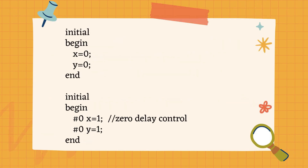Let us understand with an example. There are two initial begin-end blocks, and in both we are assigning x and y with some value. In the first initial begin-end block, we assign x and y with 0, while in the second we assign them with 1. This will create a race condition. Hence, if we use #0 in the second initial begin-end block, then x equal to 1 and y equal to 1 will be executed last. So the result will be x equal to 1, y equal to 1.